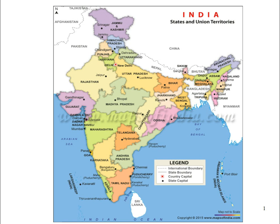The government is elected by the people of the country. The central government works from New Delhi and has its principal offices there. The President, the Prime Minister, and the Vice President are the top officials of the central government. Parliament is the main office of the central government, where elected members work. Lok Sabha and Rajya Sabha are the two houses of Parliament. The President operates from Rashtrapati Bhavan.